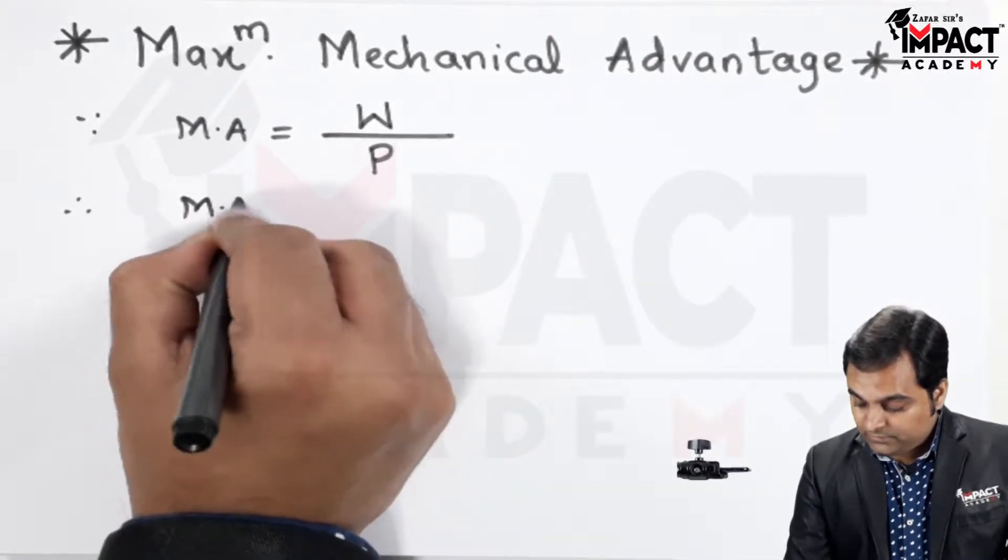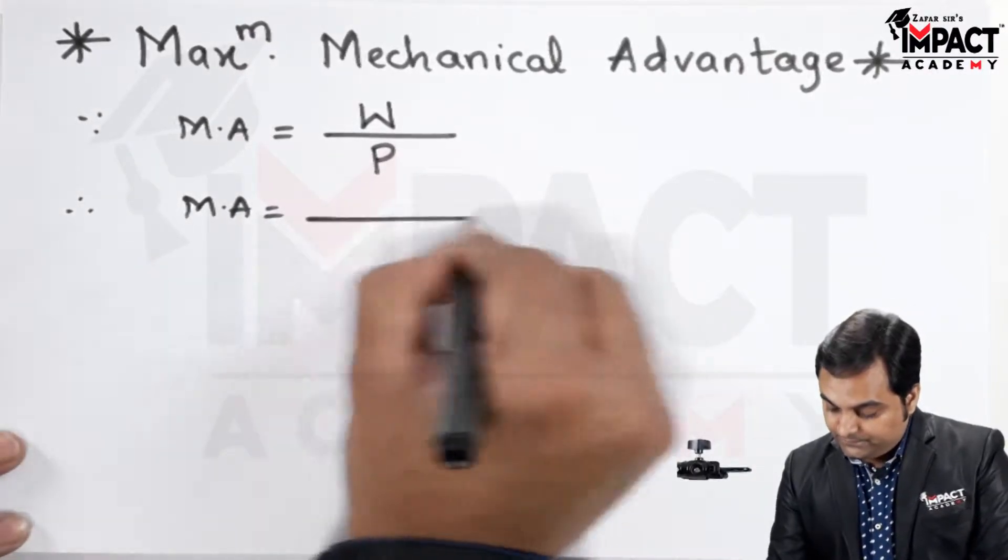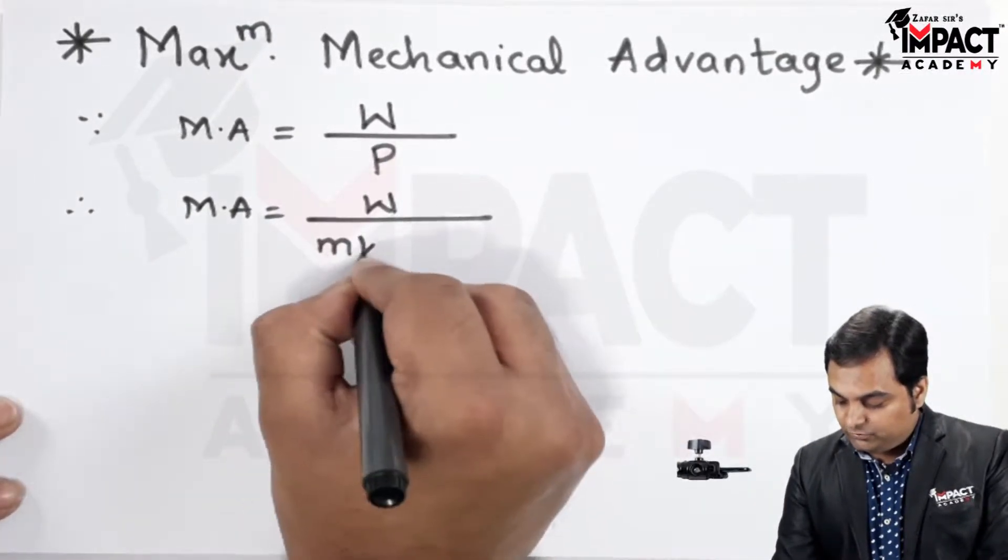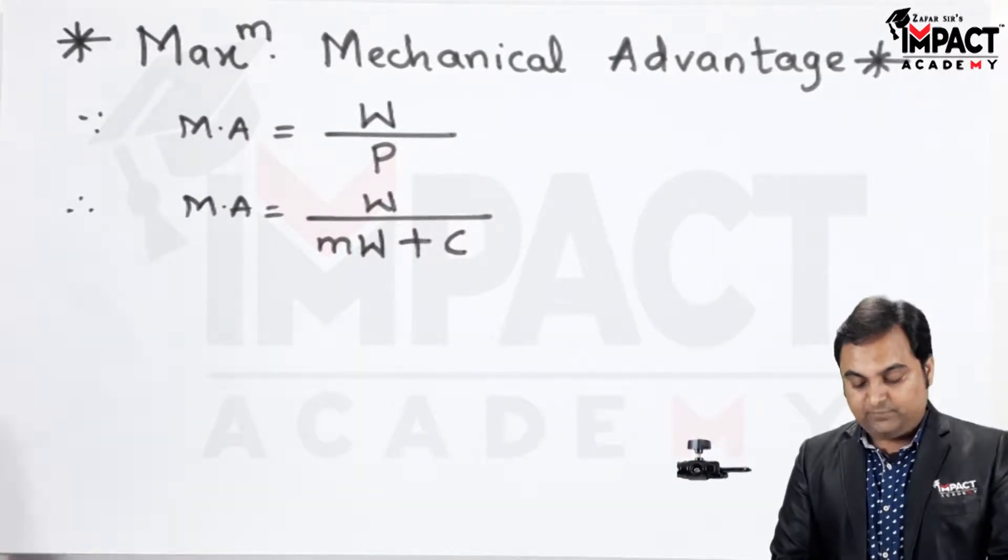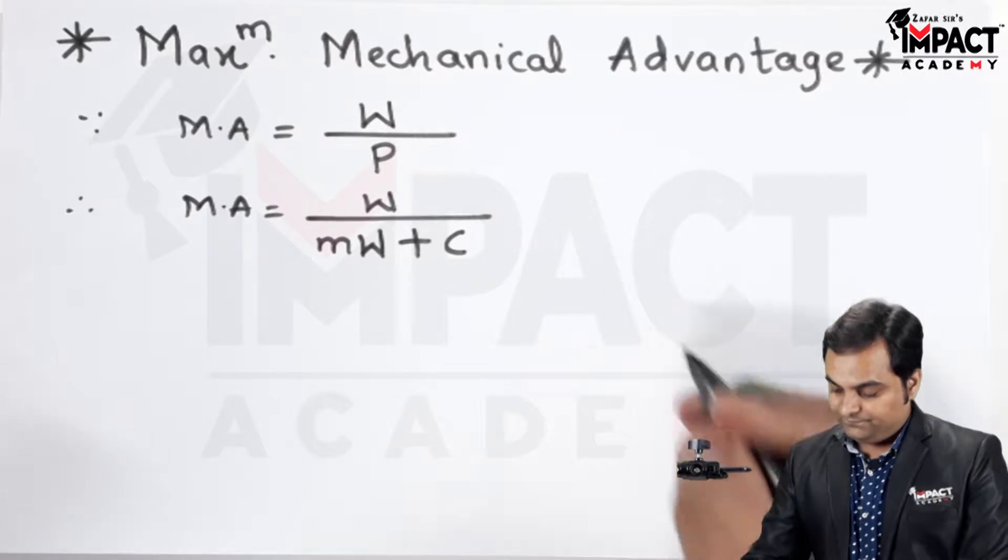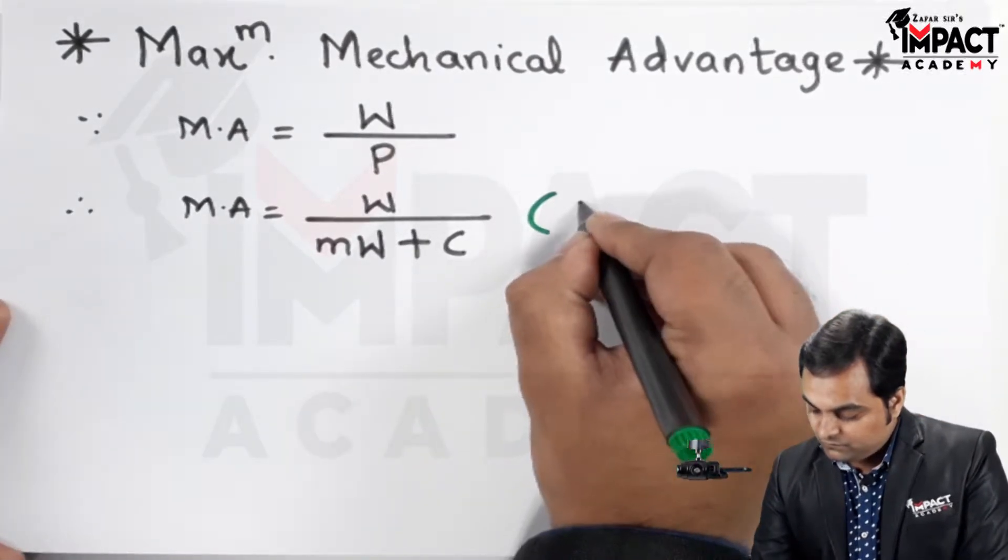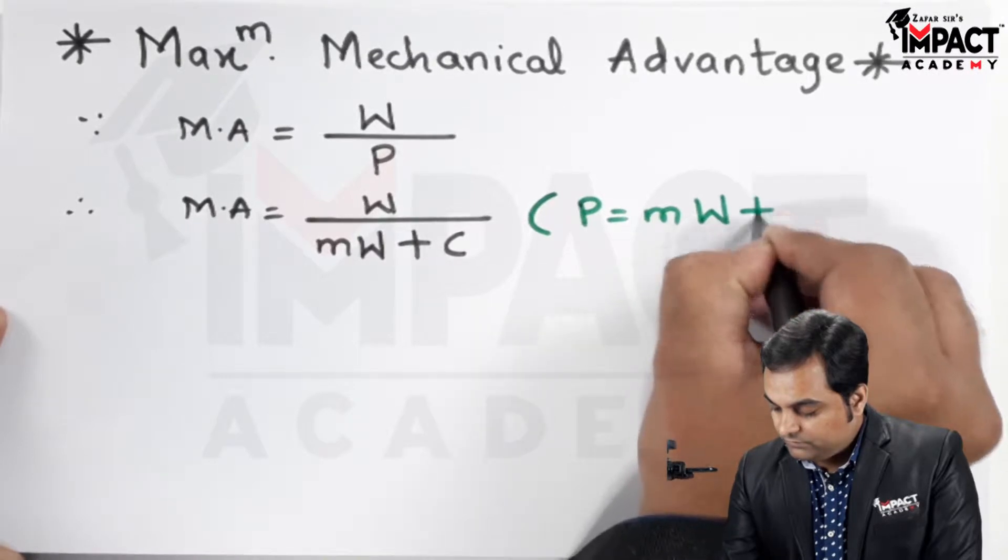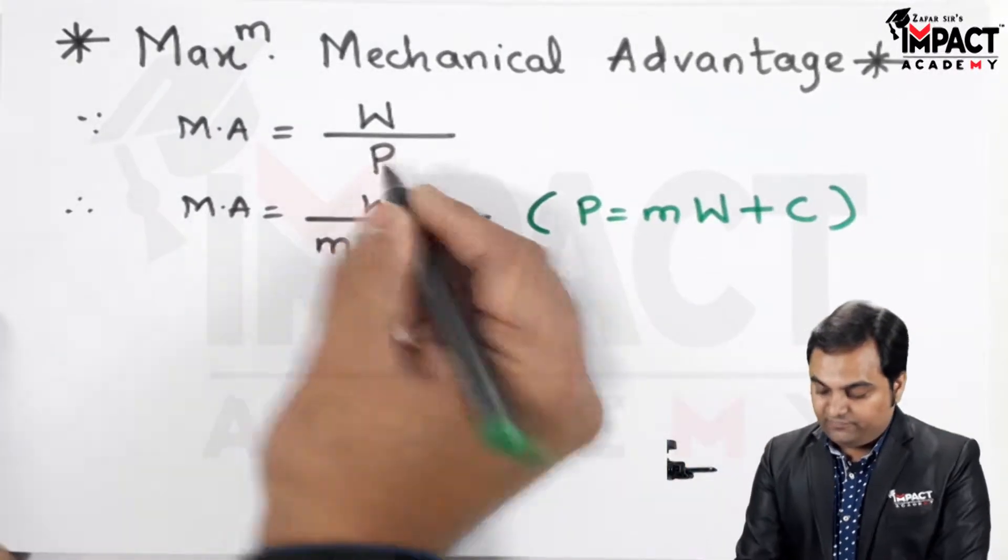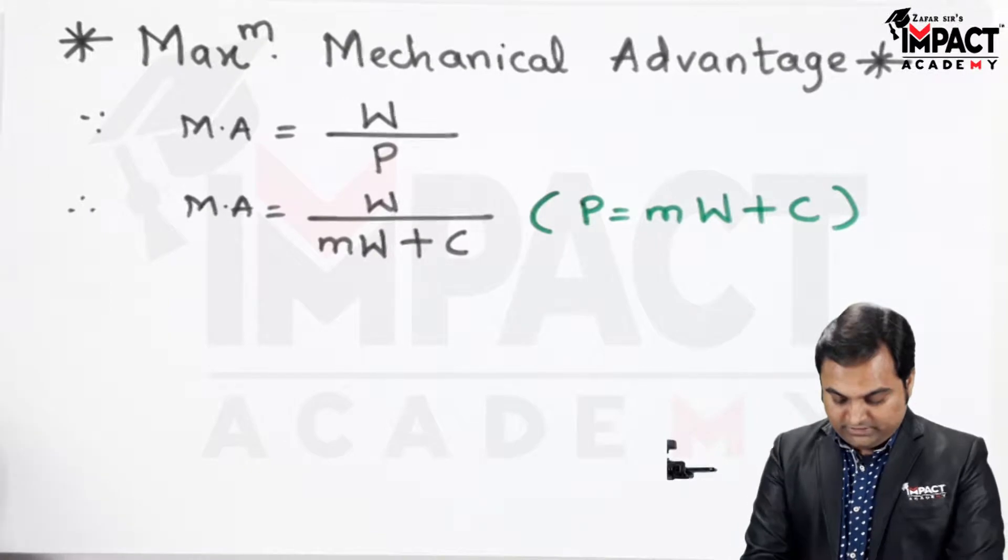Now, therefore, instead of effort, I can write it as M into W plus C. This relation has come from the law of machine, which is P equals M into W plus C. So instead of effort I have written M into W plus C.